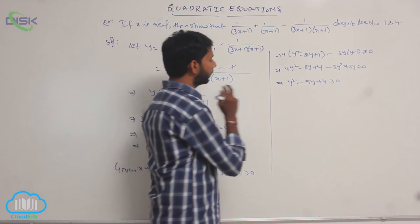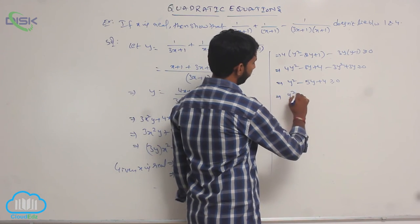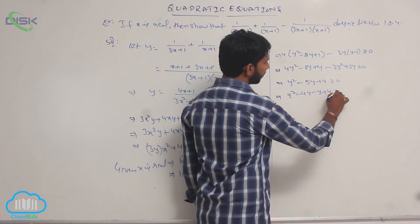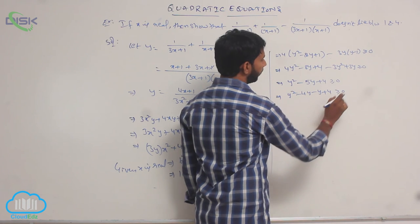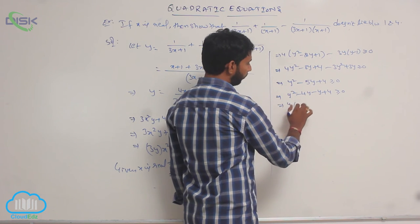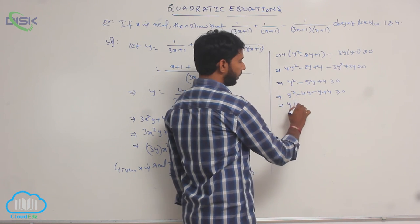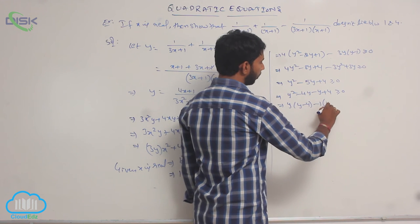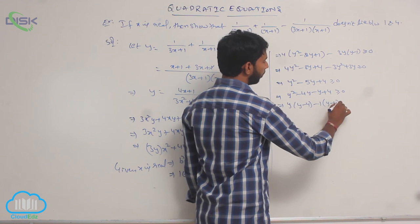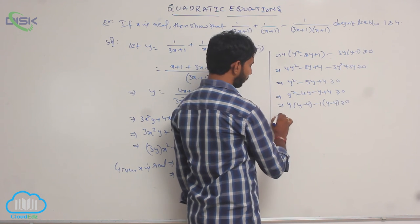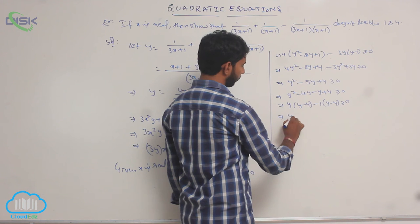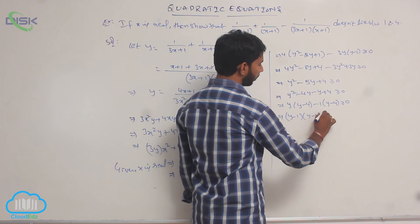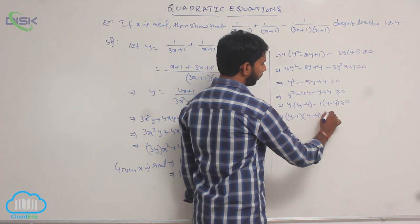Splitting into factors: y² - 4y - y + 4 ≥ 0. In the first two terms, y is common, giving y(y - 4) - 1(y - 4) ≥ 0, which is (y - 1)(y - 4) ≥ 0.